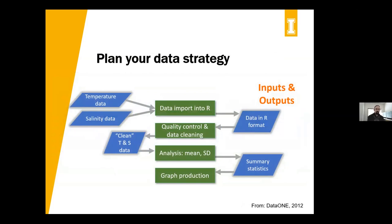One of the things when starting a project you'll want to do is think through your data strategy, and a workflow diagram is a really useful way of doing that. It gives us a chance to ask key questions about how we're going to manage data, manage files, and where we're going to put them as we go. This is an example from DataONE of a basic research project where somebody is dealing with temperature and salinity data and plans to use R to analyze it — these are the steps they're anticipating going through. Even if you don't know the exact outputs of your research, you probably have a pretty good idea of the steps you're likely to go through.